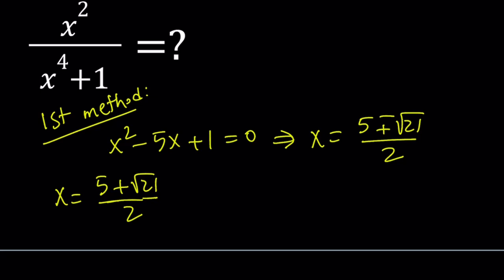Let's go ahead and square both sides so we can get x squared. I did the work for you, so to save you the trouble, from here x squared becomes 23 plus 5 times the square root of 21 over 2. Great.